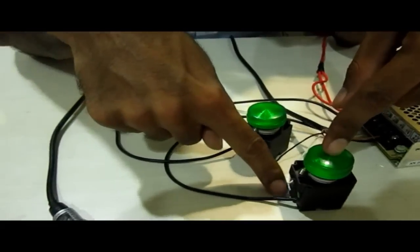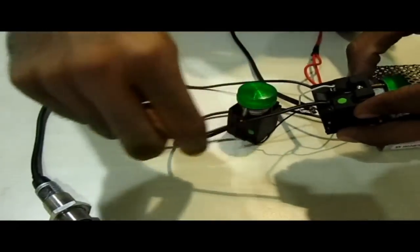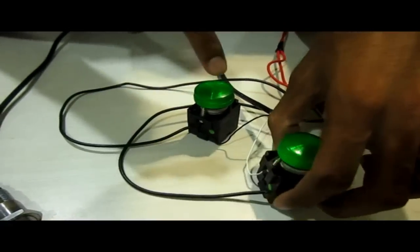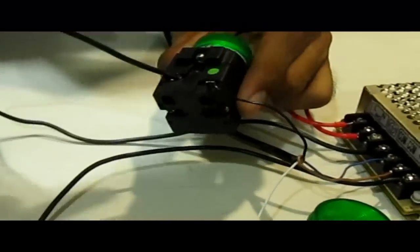Now this white wire which is giving 0 volt is connected to the negative terminal of this indicator and positive is given from the power supply. And this black wire which is giving 24 volt on detection is connected to the positive terminal and the negative is connected to the power supply.